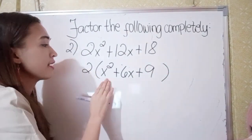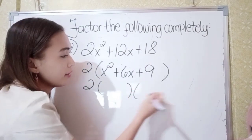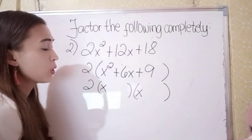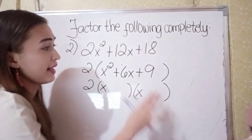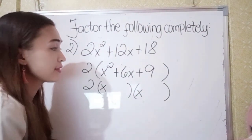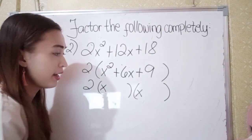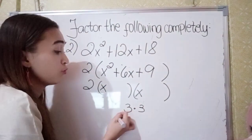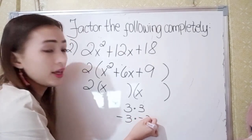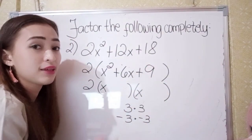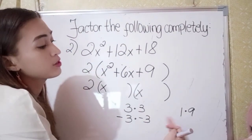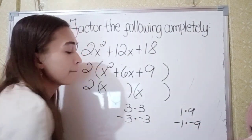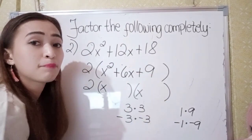Now let's factor this term. We have 2. The factors of x squared are x times x. Think of a number that if we multiply gives positive 9, and if we add gives positive 6. It could be 3 times 3, negative 3 times negative 3, 1 times 9, or negative 1 times negative 9.